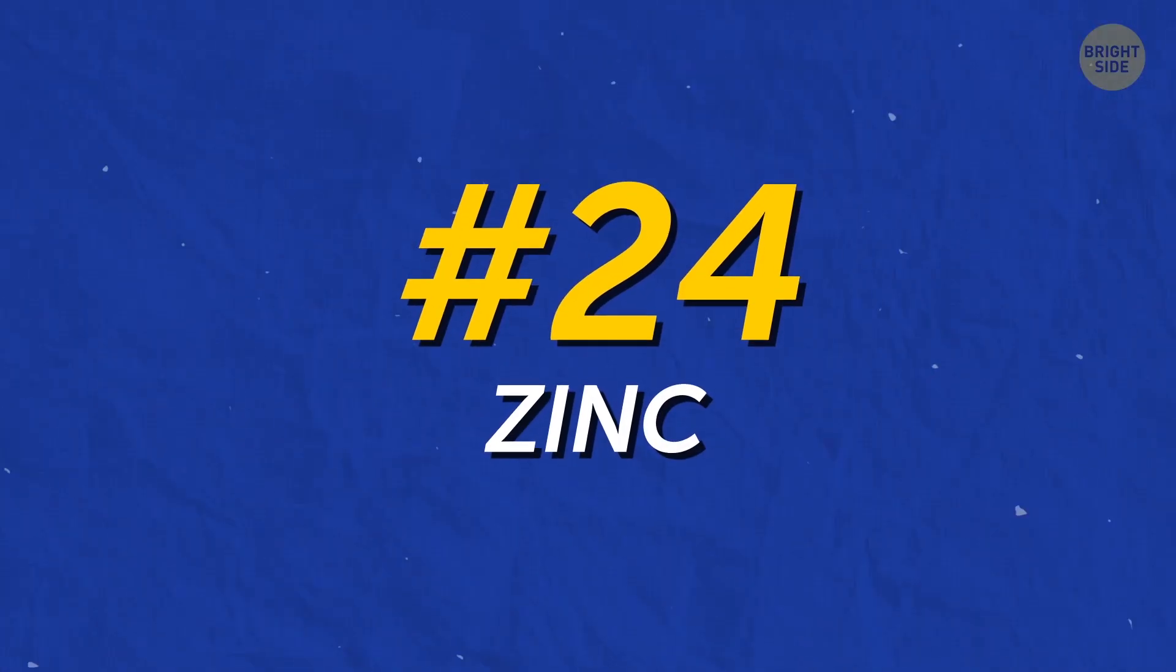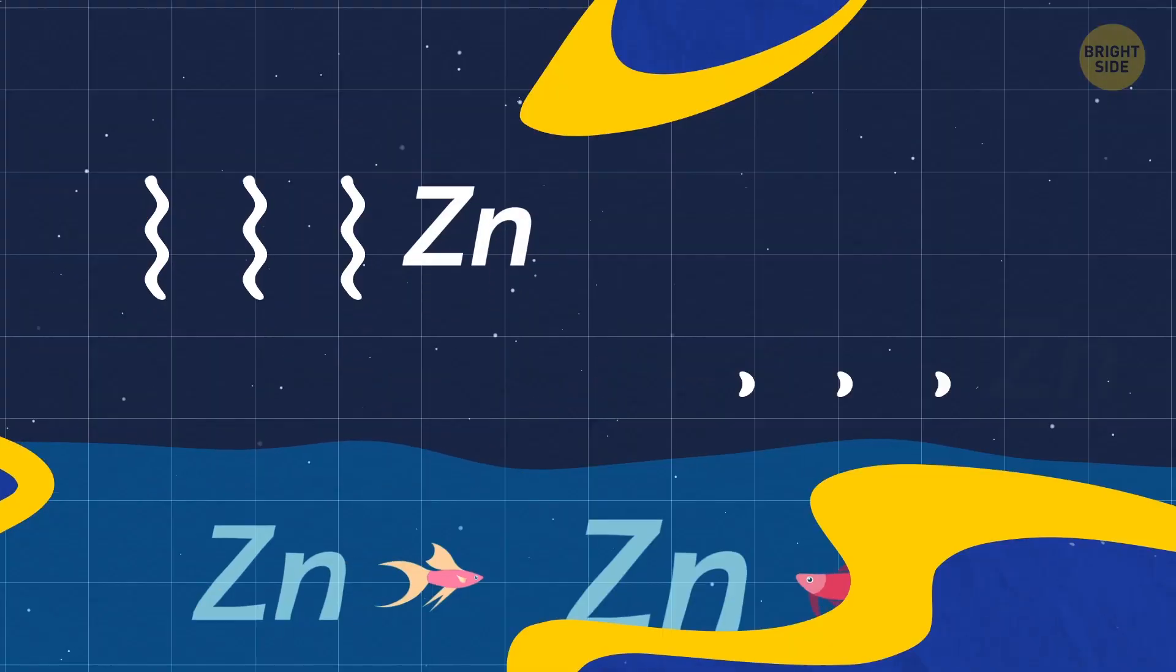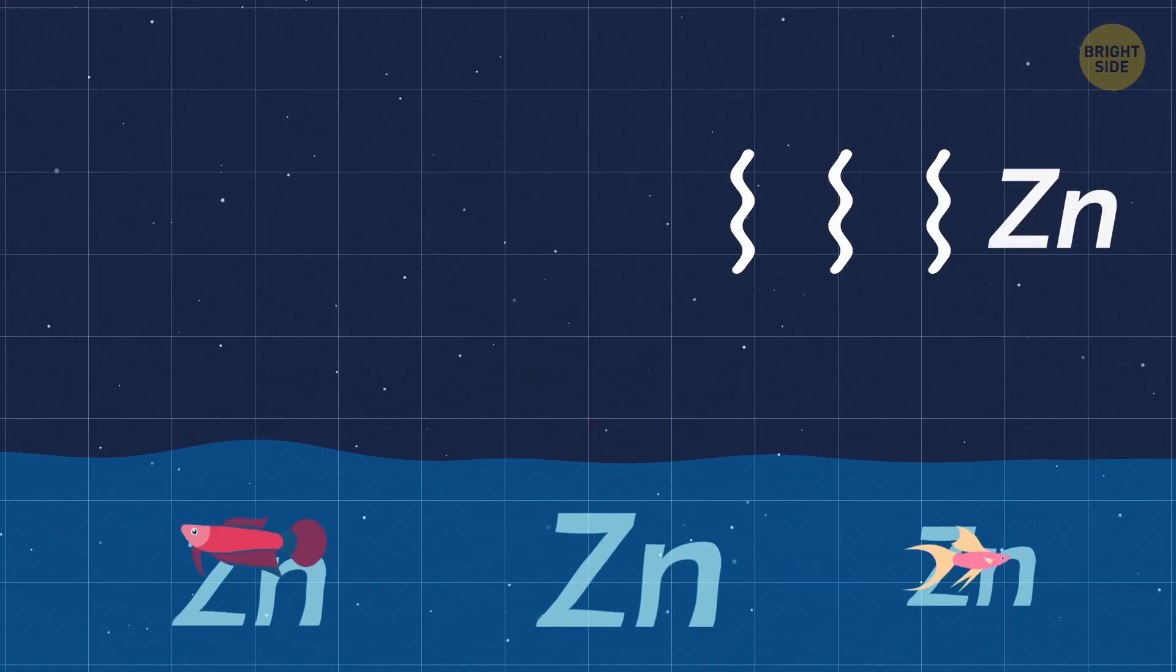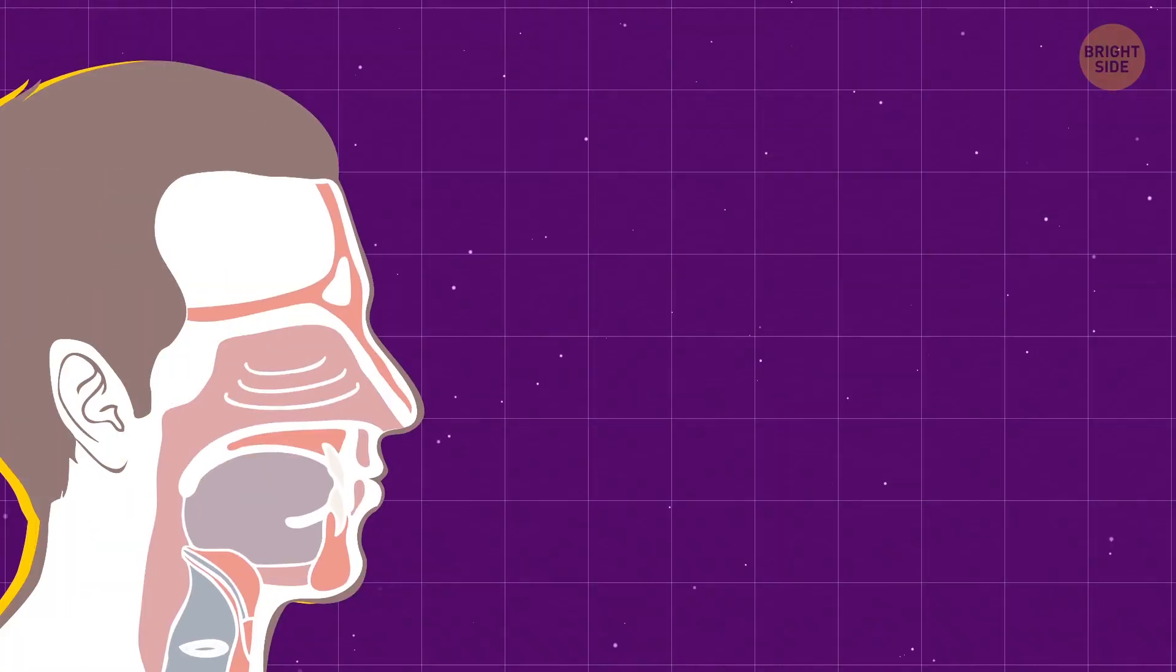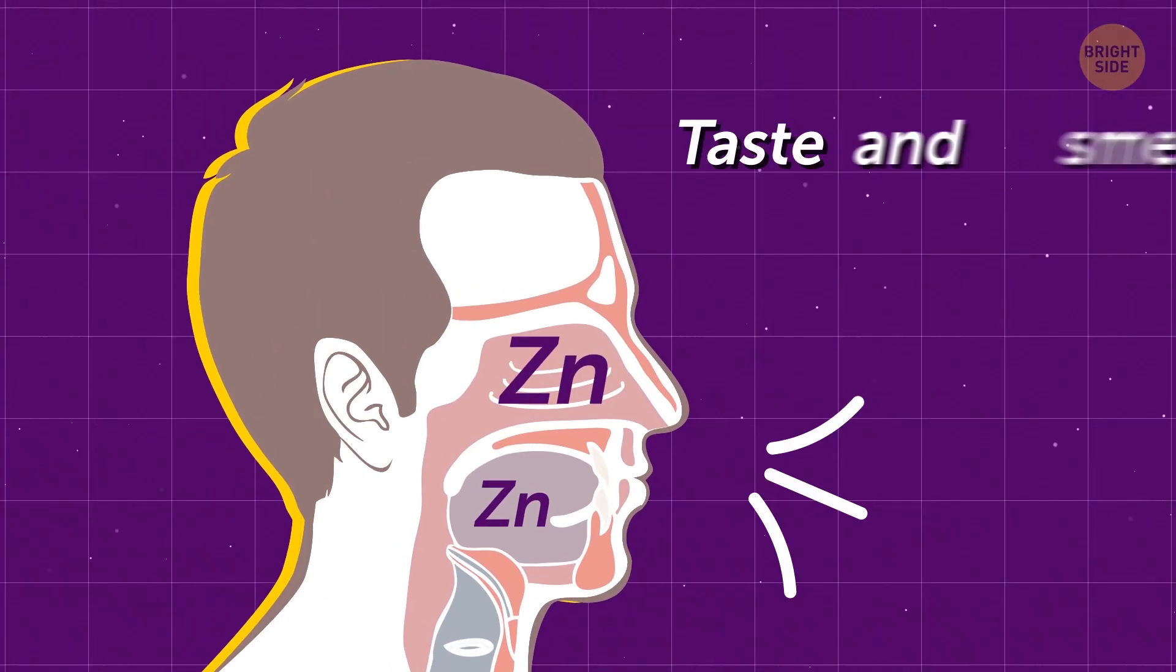Zinc holds the 24th place. Small traces of zinc are found in the ocean water and the air. Our bodies even use zinc to help with our sense of taste and smell.